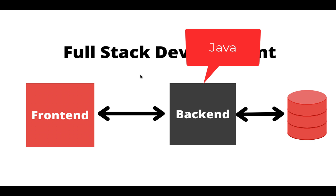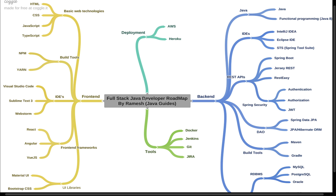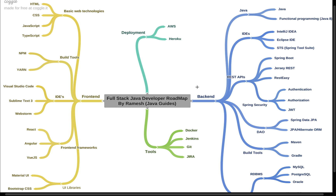The full stack Java developer roadmap is divided into two sections: front end and back end. First we'll look at the technologies, frameworks, and tools needed for front-end application development, then we'll move to what you need for back-end application development.